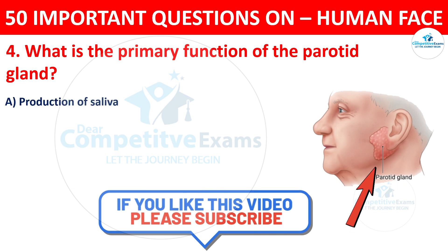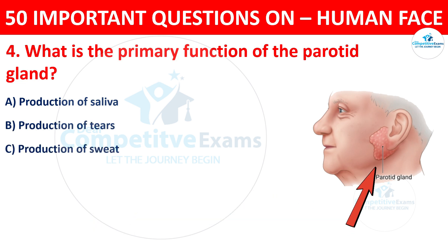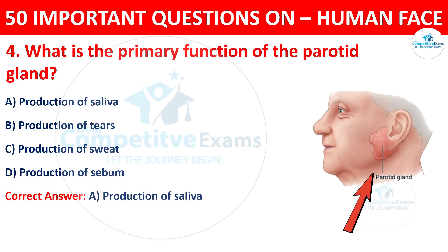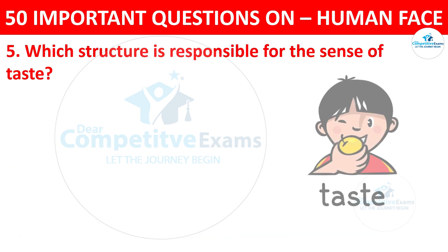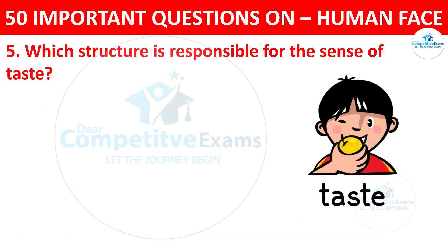Question number four: what is the primary function of the parotid gland? The options are production of saliva, production of tears, production of sweat, or production of sebum. The correct answer is A, production of saliva. The parotid gland is a major salivary gland responsible for producing saliva, which aids in digestion and lubricates the mouth.